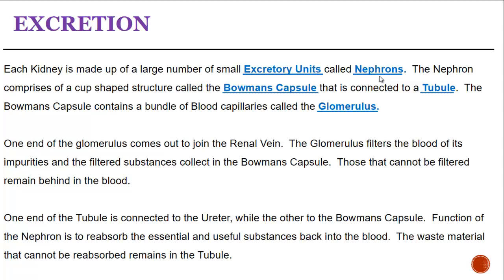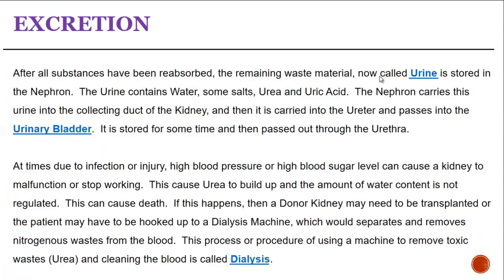The function of the nephron is to reabsorb the essential and useful substances back into the blood. The waste material that cannot be reabsorbed remains in the tubule. After all the substances have been reabsorbed, the remaining waste material now called urine is stored in the nephron. This urine contains water, uric acid, some salts, and urea.